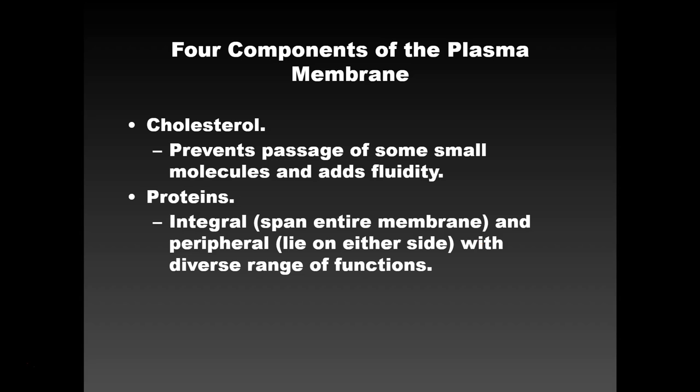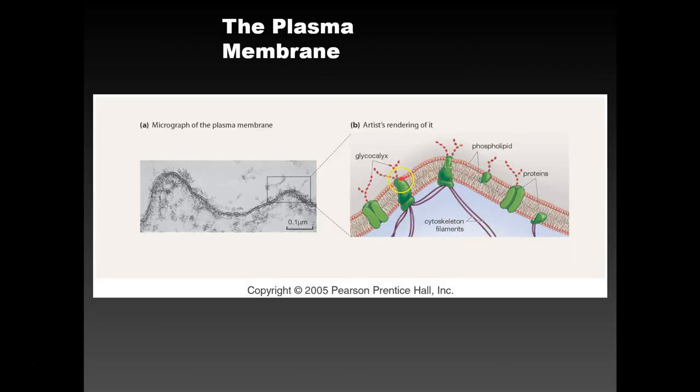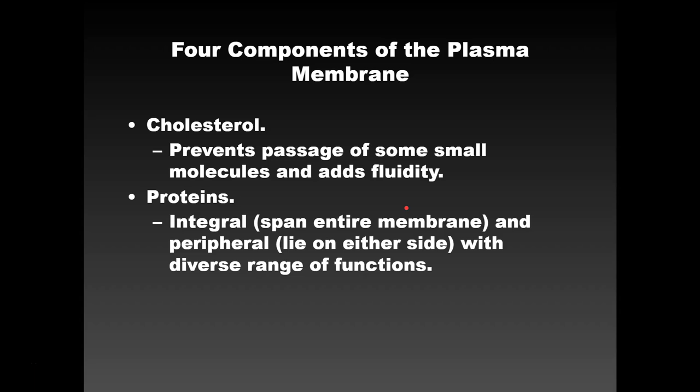Cholesterol prevents the passage of some small molecules and adds fluidity to the plasma membrane. You do not want a rigid plasma membrane — you want things to be able to transfer through when the cell wants them to. You also have integral proteins, which by definition go from one side of the membrane to the other, and peripheral proteins, which don't pass all the way through. Each has a diverse range of functions.